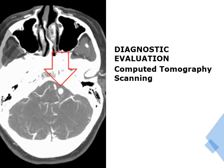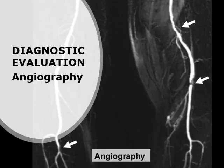CT scan provides cross-sectional images of soft tissues and visualizes areas of volume changes in an extremity and the compartments involved. Angiography produces an arteriogram used to confirm the diagnosis of occlusive arterial diseases. Upon injection of radiopaque dye, arteries and blood vessels are clearly visualized, and sites of obstruction can be identified.